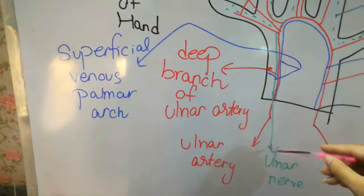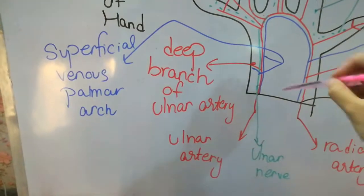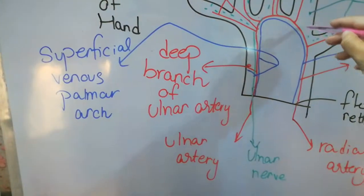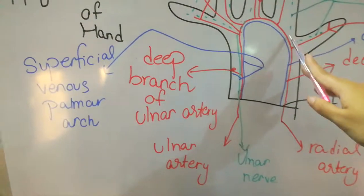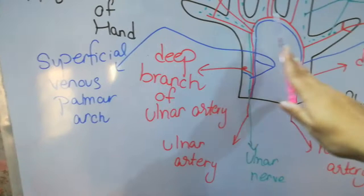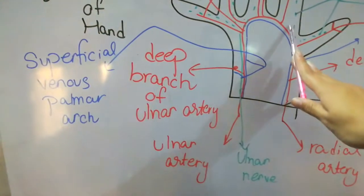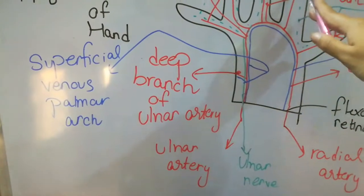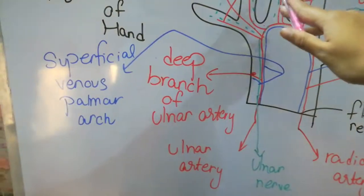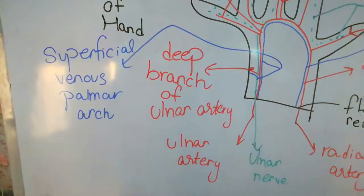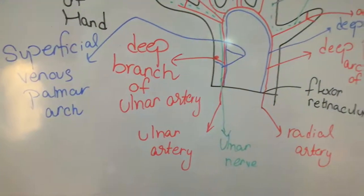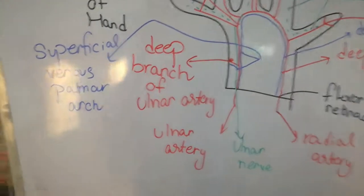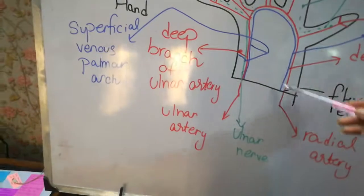The superficial part of the ulnar artery forms an arch known as the superficial palmar arch, which extends across the palm and gives rise to four digital arteries that supply the fingers. That covers the ulnar artery.